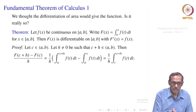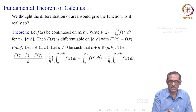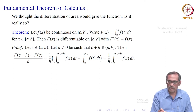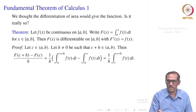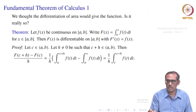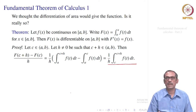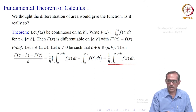Suppose c is a point inside a to b, and let us take any h not equal to 0 such that c plus h belongs to a to b. We want to show that capital F prime at c equals the limit as h goes to 0 of F of c plus h minus F of c divided by h. Now, F of c plus h equals the integral from a to c plus h of f of t dt, and F of c equals the integral from a to c of f of t dt. Subtracting and dividing by h, by the property of the integral we get 1 over h times the integral from c to c plus h of f of t dt.